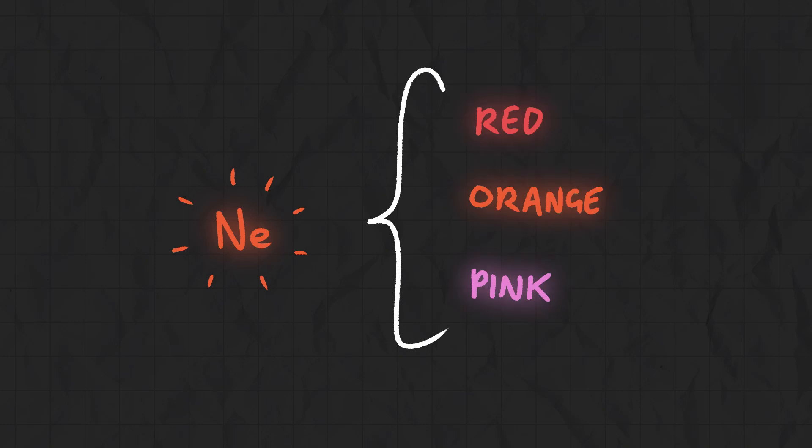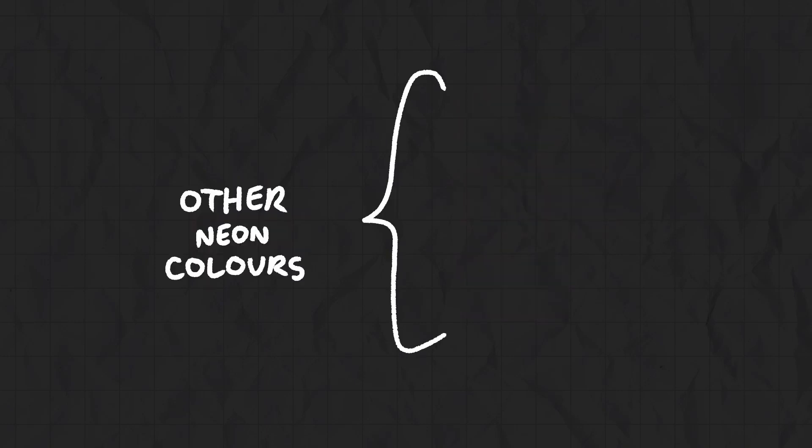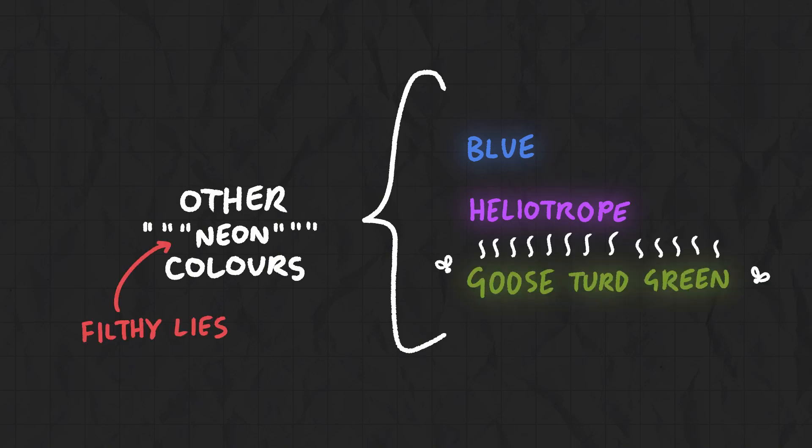Neon is best used for reds, oranges and pinks, but if you've ever seen a quote-unquote neon sign that's blue or heliotrope or goose turd green—yes that's a real color, don't ask me why—there's a good chance it doesn't contain any neon at all.